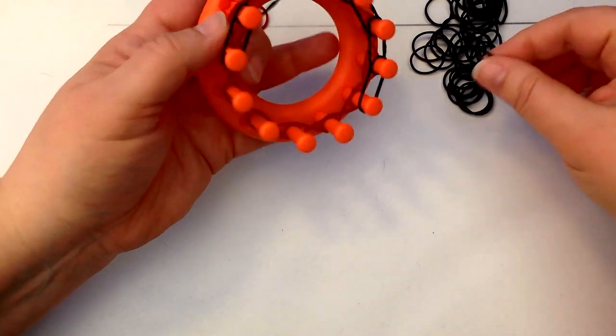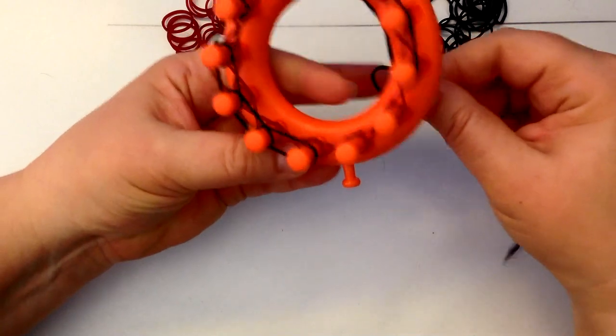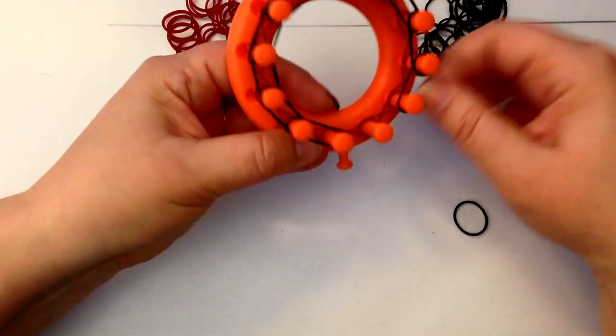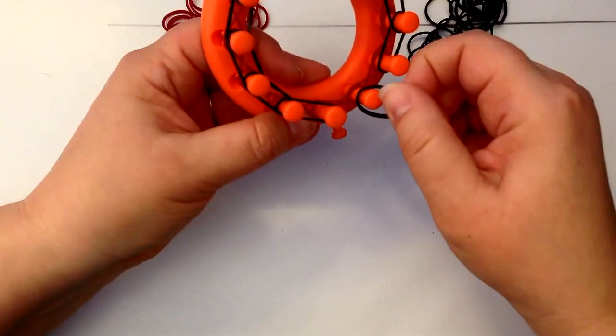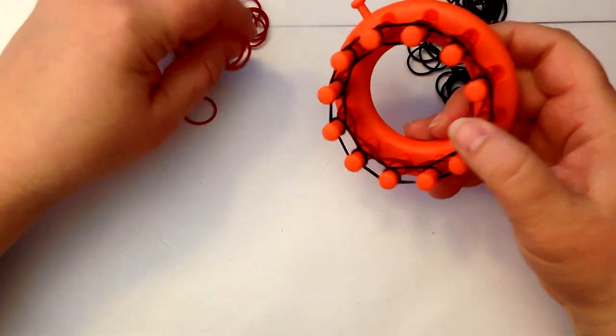Now I tend to like to do three rounds at a time. I think it gives a nicer, more sturdy result. And I'm just going to alternate my colors, so that's black, and now let's go back to the beet red.